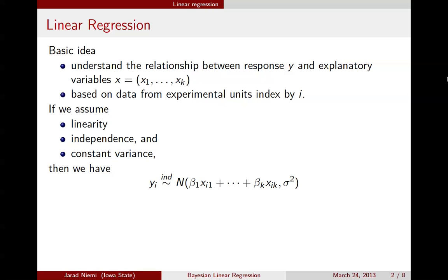So we can encapsulate this in the model here, where we've now assumed that we also have normality. The response variable for experimental unit i is independent with normal distribution, whose mean is a linear combination of the explanatory variables and a constant variance. Typically, we'll include an intercept, and in this notation, an intercept just means that the first explanatory variable value is 1 for all experimental units.